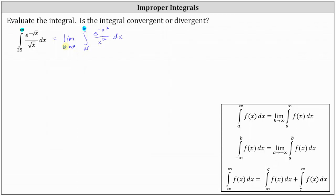To evaluate the integral, we will perform u-substitution. We let u equal the exponent negative x to the power of one half, and therefore du equals the derivative of negative x to the power of one half times dx, which is negative one half times x to the power of negative one half, giving us du equals negative one half times one divided by x to the power of one half, times dx.